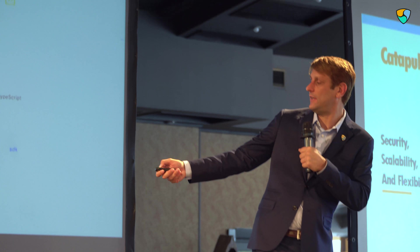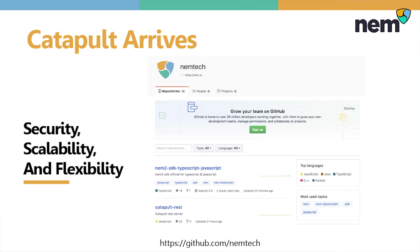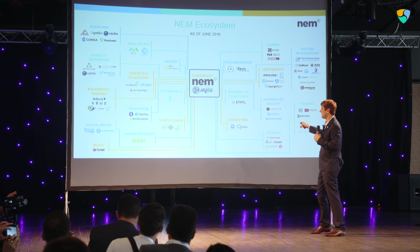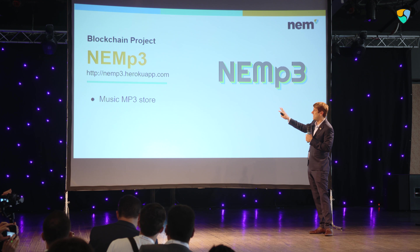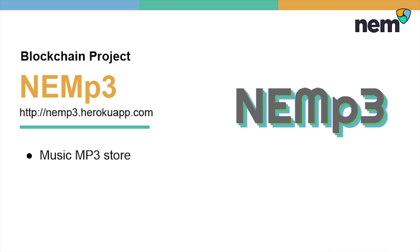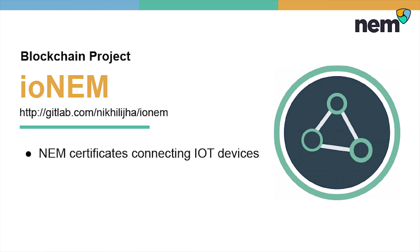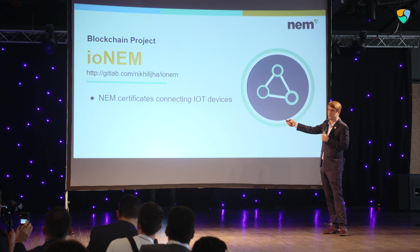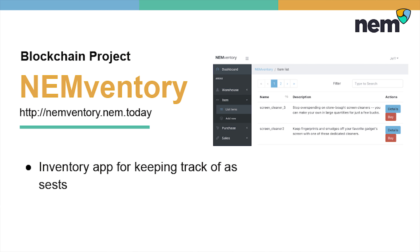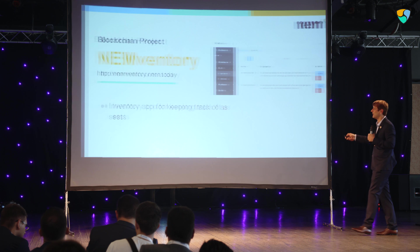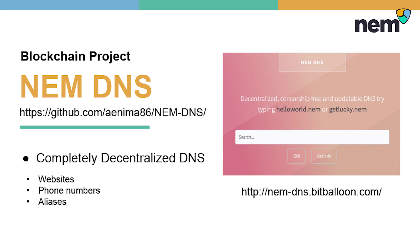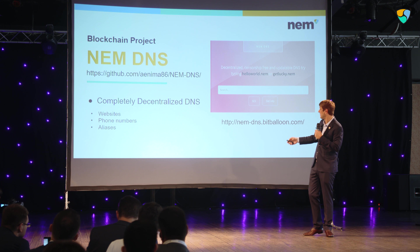Catapult is live — you can see it at github.nim.tech. Companies all around the world in Asia, America, and Europe have already downloaded, forked it, and started building on it. Here are some examples from our ecosystem. NIM P3 is an open source project about buying and selling music on the blockchain. IONIM is an open source IoT project connecting NIM into IoT. NINVENTORY is about doing inventory and supply chain on the NIM blockchain. And NIM DNS uses the NIM blockchain as a DNS server — not just for websites but for phone numbers or anything else.